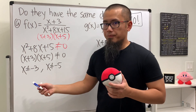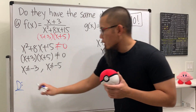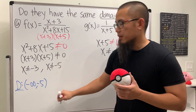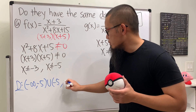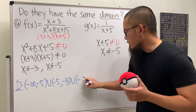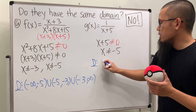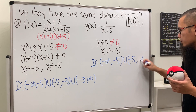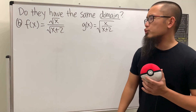For practice, let's write the domains in interval notation. The domain for f of x: since negative five is smaller, we go from negative infinity to negative five (not including negative five), union from negative five to negative three (not including negative three), union from negative three to infinity. The domain for g of x is simply from negative infinity to negative five, union from negative five to positive infinity.